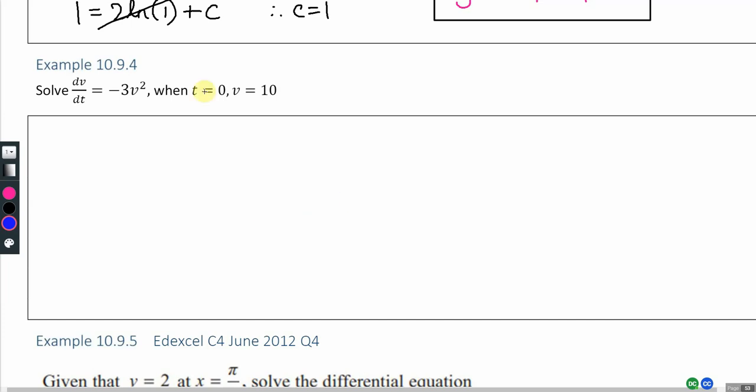Example 10.9.4. Applying the same method as in the previous examples, I'm going to start by separating the variables so that anything to do with v is on one side, anything to do with t is on the other side.